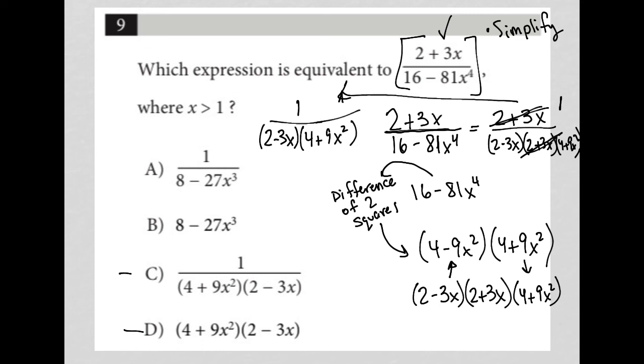So what answer matches that? That would be choice C. The order of my denominator is a little bit different or is different than what they have listed, but it's the exact same thing. 2 minus 3x times 4 plus 9x squared. So choice C is the correct answer.